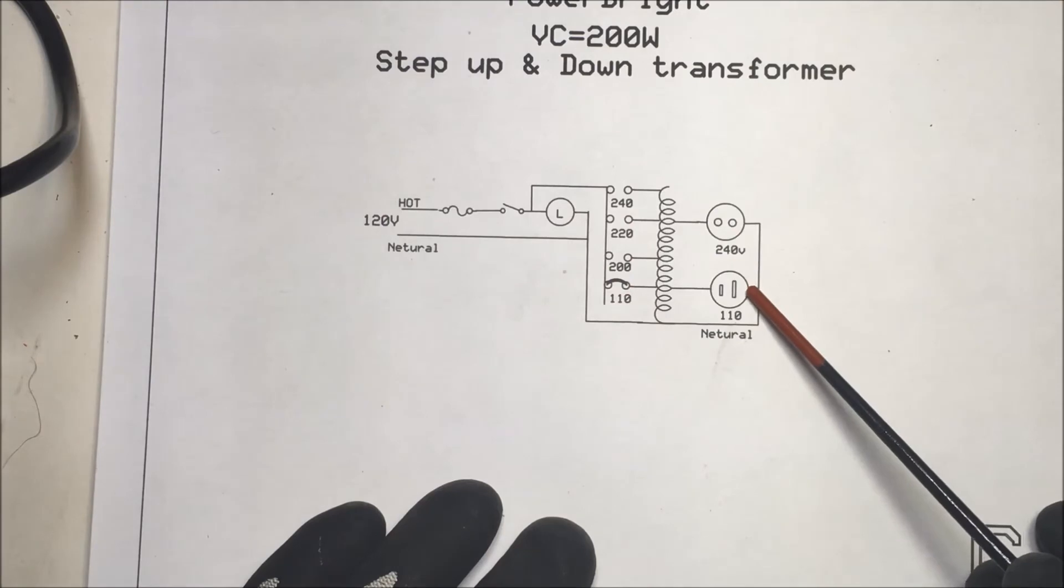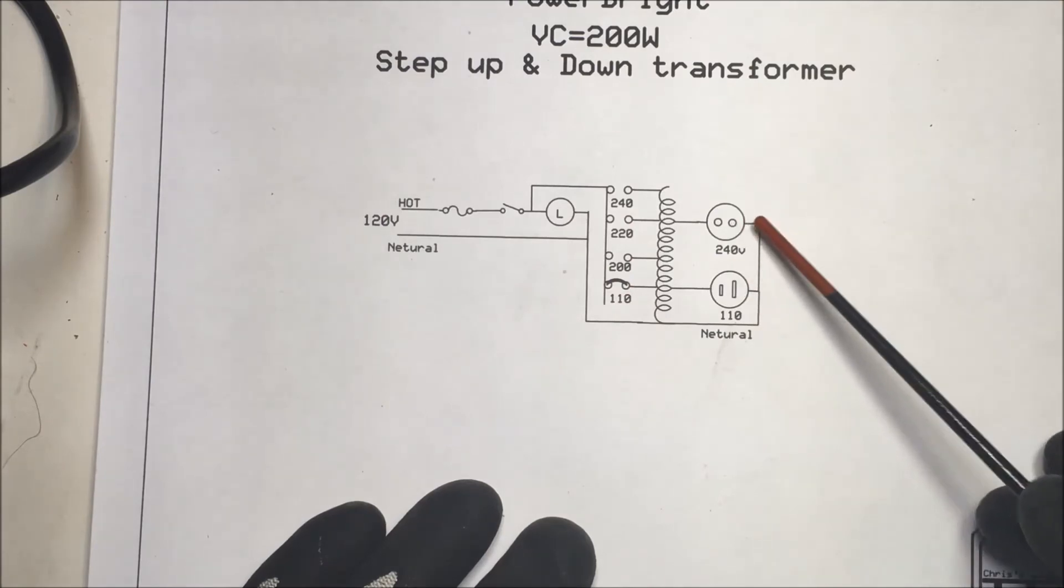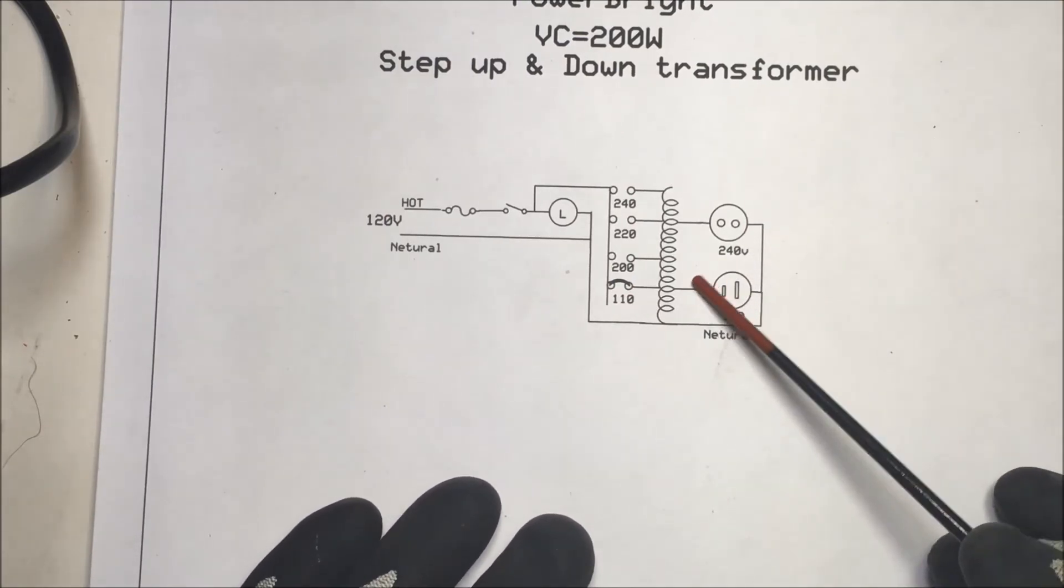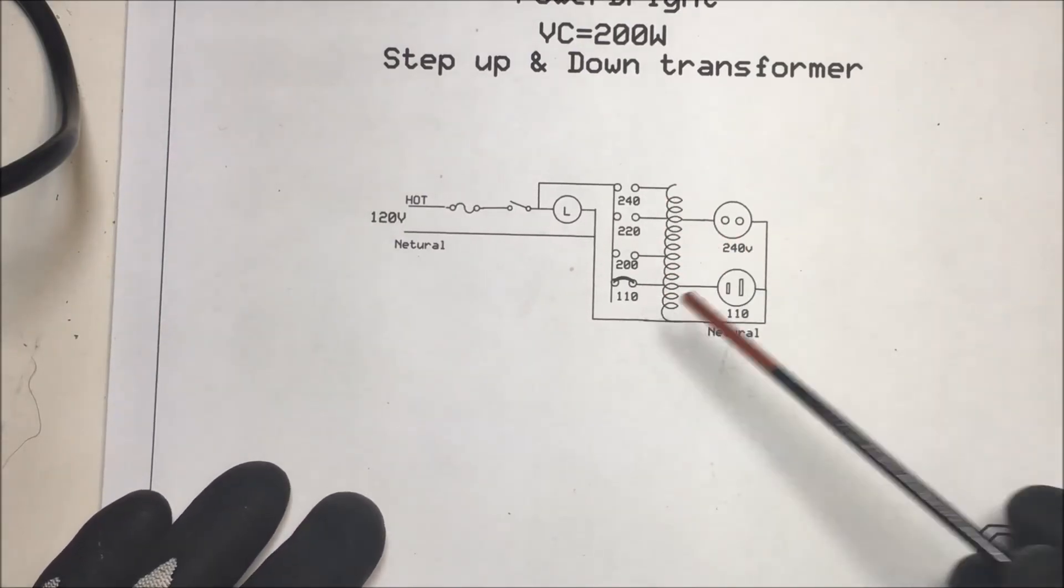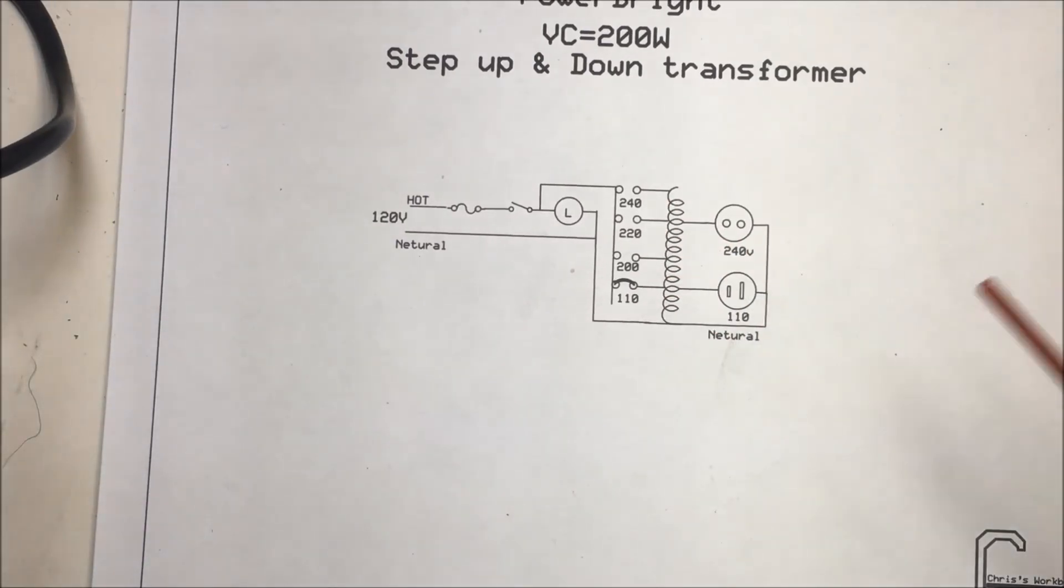The neutral comes to one side of each of these plugs and then the other side is tied to the coils in here and you can adjust the voltage. It is grounded, the case is grounded and these plugs are actually grounded plugs.